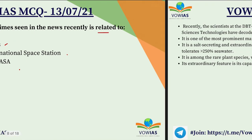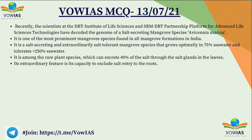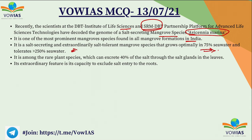Avicinia marina is a mangrove species. Recently scientists at the DBT Institute of Life Sciences and SRM Department of Biotechnology partnered and performed experiments on the platform for advanced life science and technologies, and they decoded the genome of the salt-secreting mangrove species Avicinia marina. This species is the most prominent mangrove species found in all mangrove formations in India. It tolerates salt to a great extent — it grows optimally in 75% sea water and tolerates more than 250% of sea water.